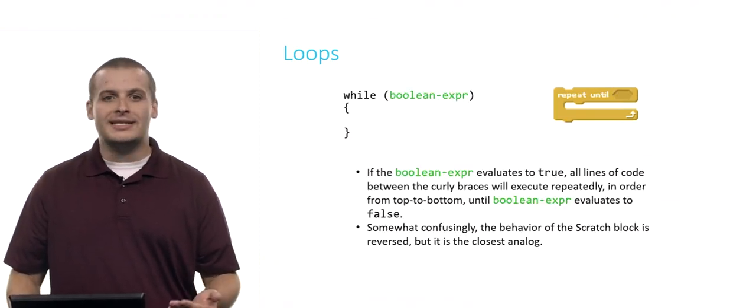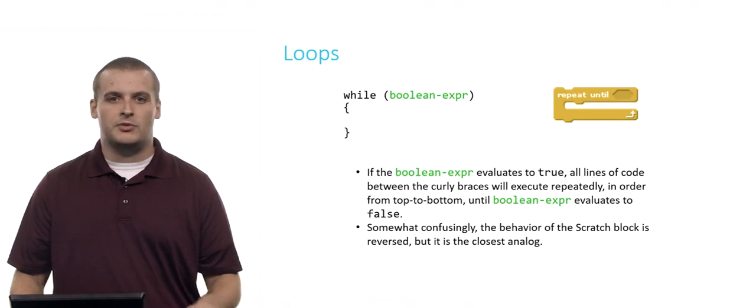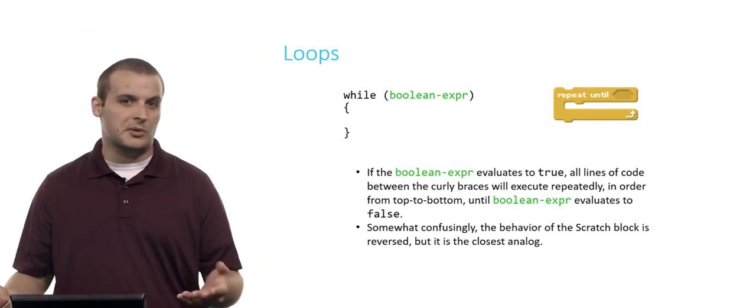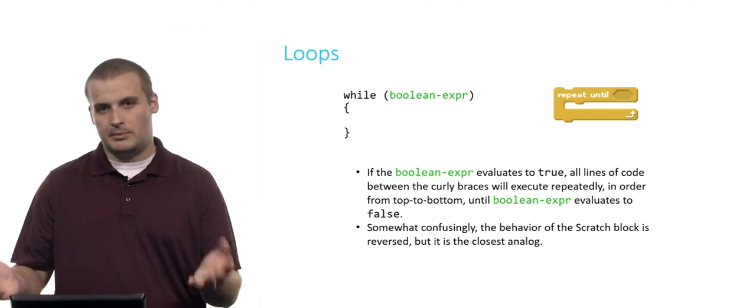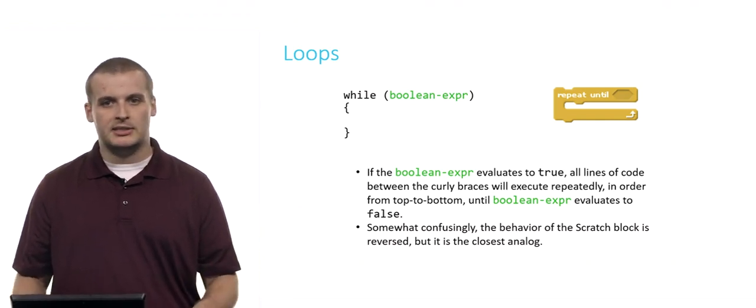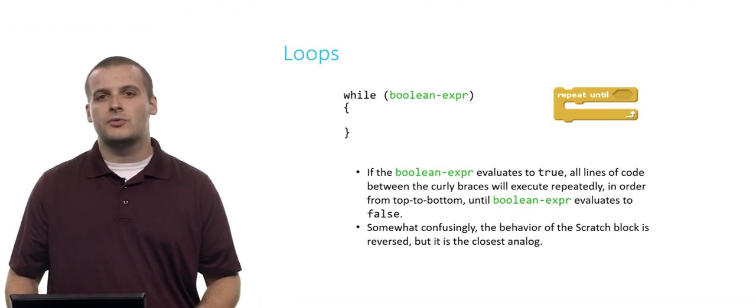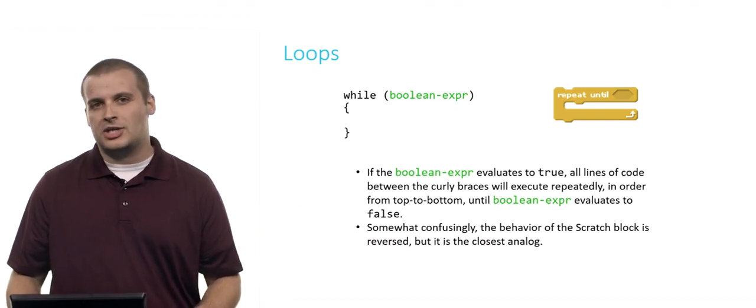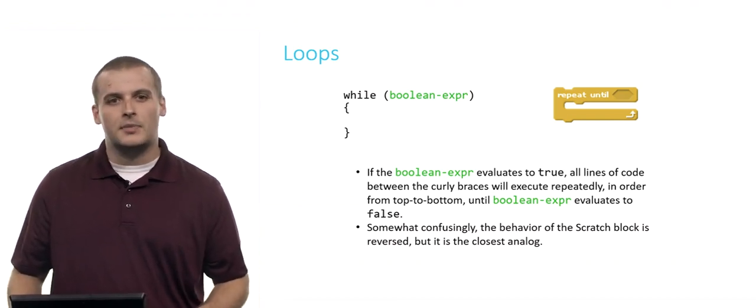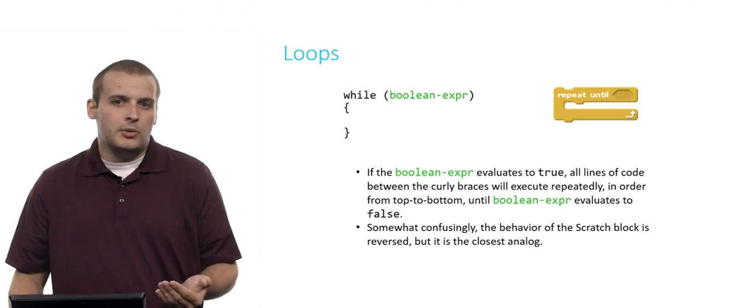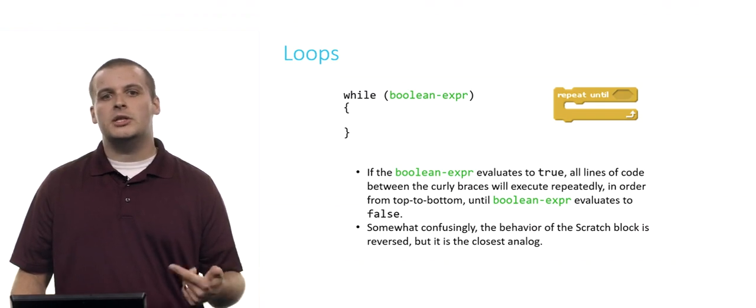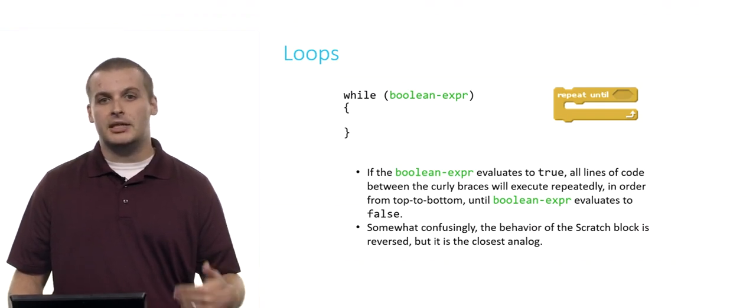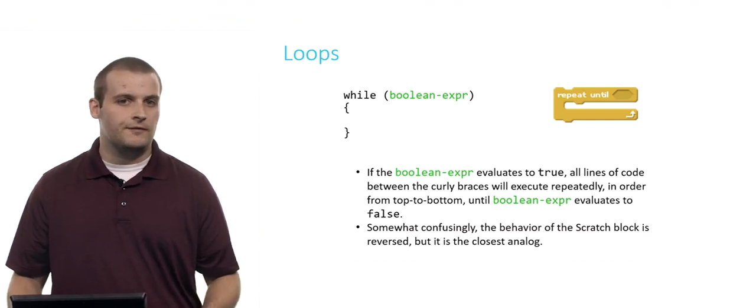Now, while loops are not always infinite. We can also replace the Boolean expression with something a little more useful than just true. So here's another example: while, and then some Boolean expression, and then curly braces. That's pretty much analogous to repeat until from Scratch, although in a second I'll explain the difference. In C, if the Boolean expression inside of the while loop evaluates to true, the lines of code between the curly braces will execute repeatedly, over and over, until the Boolean expression evaluates to false.